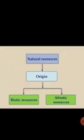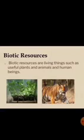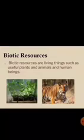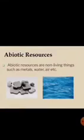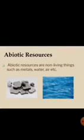Now let's move to the classification of natural resources on the basis of origin. On this basis, resources are divided into biotic resources and abiotic resources. Biotic resources are living things such as useful plants, animals, and human beings — all living creatures are included in biotic resources. Abiotic resources are the exact opposite — they are non-living things such as metals, water, and air. Whatever is non-living will be taken into consideration as abiotic resources.